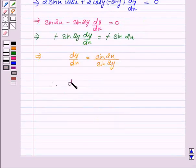Therefore, dy by dx equal to sin 2x upon sin 2y.